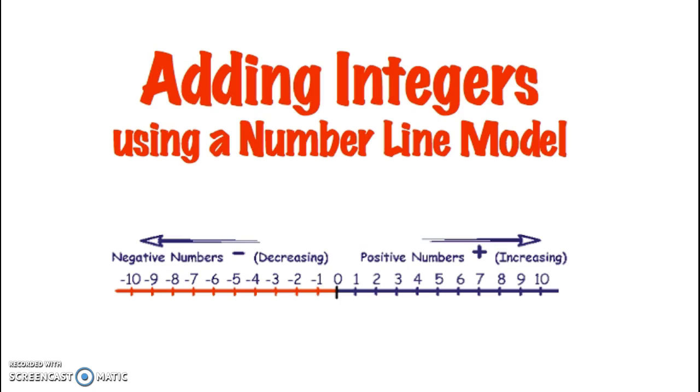Notice this number line, you'll notice that the negative numbers are on the left and as you move to the left, numbers are decreasing, they get smaller and smaller. Positive numbers are on the right of the number line and as you move to the right, numbers get larger and larger.